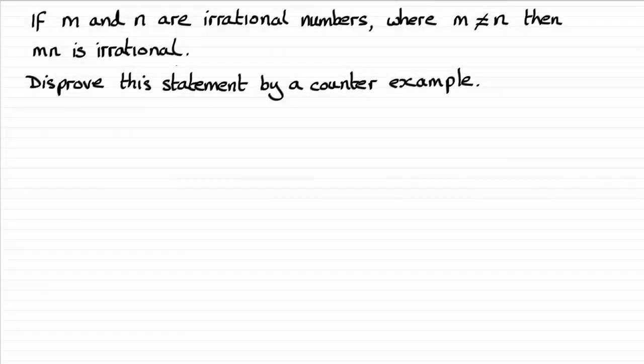For this question, we've got to disprove this statement by a counter example. That is, if m and n are irrational numbers where m doesn't equal n, then m times n is irrational. What I'm going to do is give you three examples to show you how this can be done.